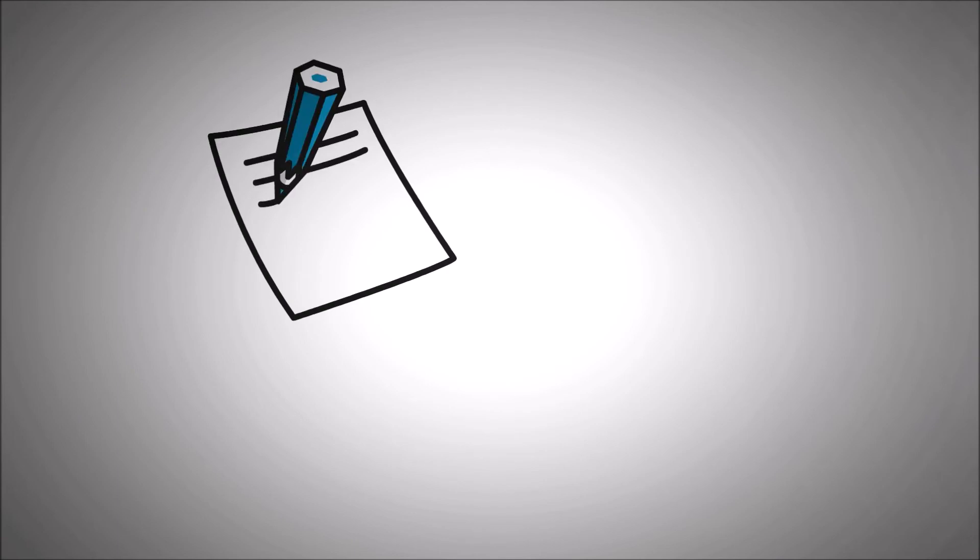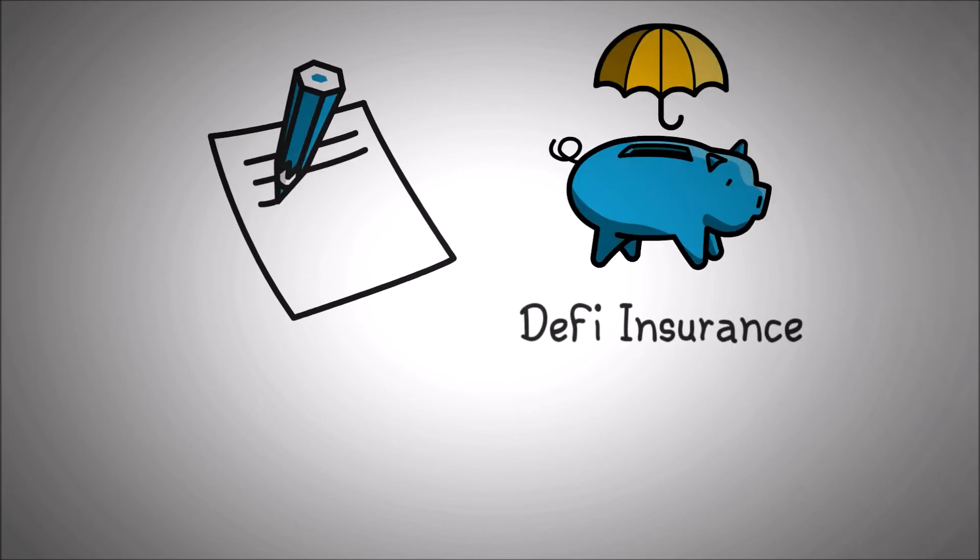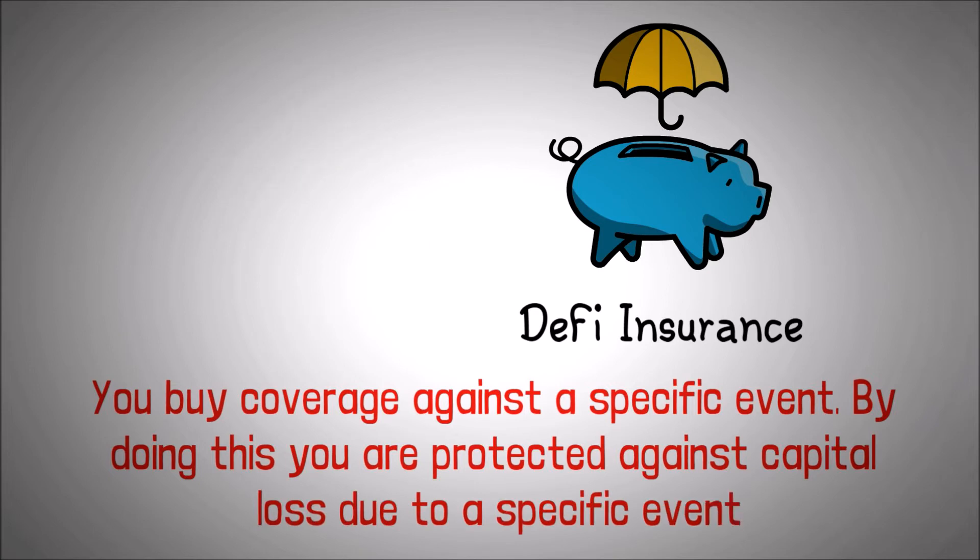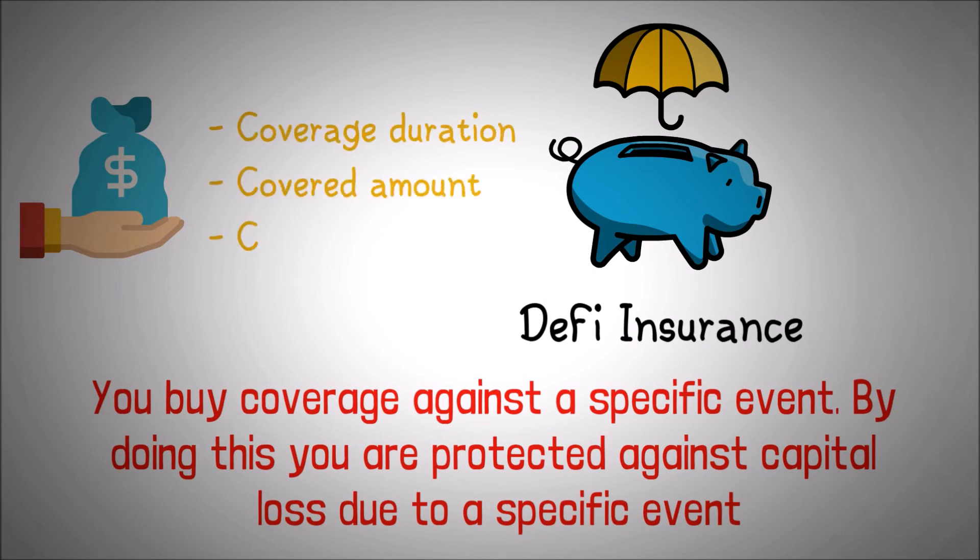Let's summarize all this. Simply put, DeFi insurance works as follows. You buy coverage against a specific event. By doing this, you are protected against capital loss due to a specific event. The premium you pay for this coverage depends on multiple factors such as the coverage duration, covered amount, and the covered event.